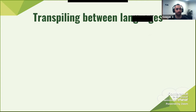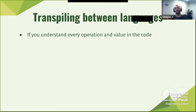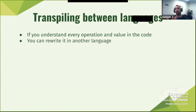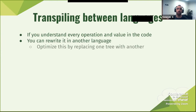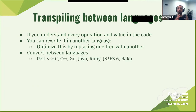Transpiling between languages — also really, really nice. If you understand every operation and value in the code, you can rewrite it in a different language. You can optimize it by replacing one tree with another. You can convert between languages — move Perl to C, rewrite it in C++, Go, Java, Ruby, or Raku.